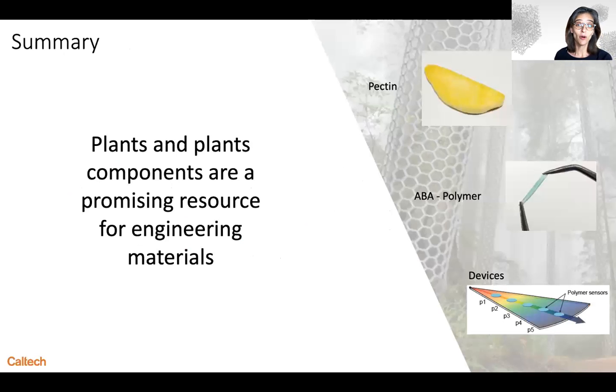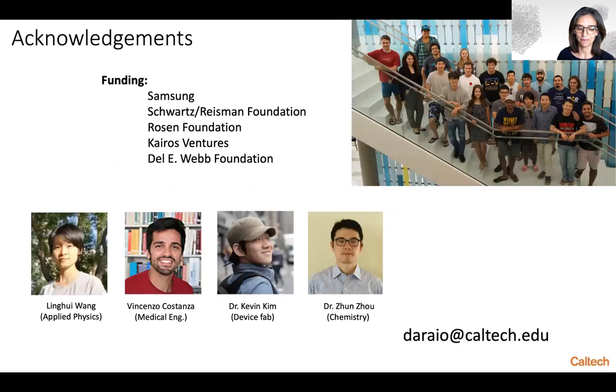So I hope that in the last 15 minutes or so I've been able to convince you that plants and plant components are a promising resource for engineering materials. Starting from something as common as pectin, it is possible to create a synthetic polymer of ABA type for electronic devices and potentially commercial consumer electronic systems.